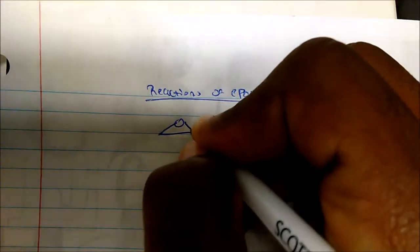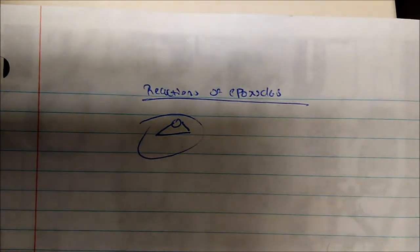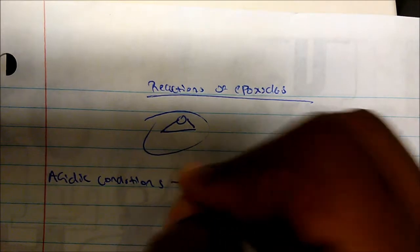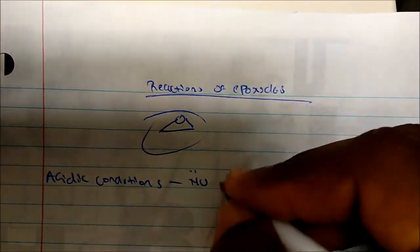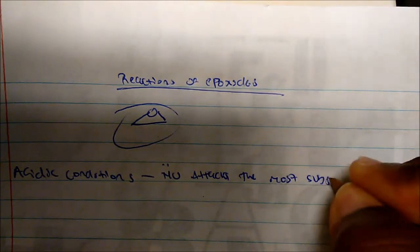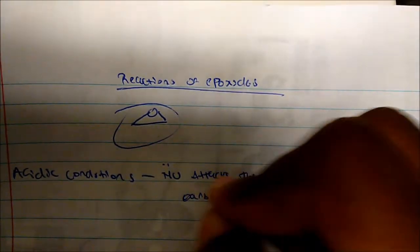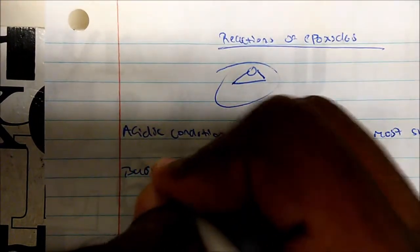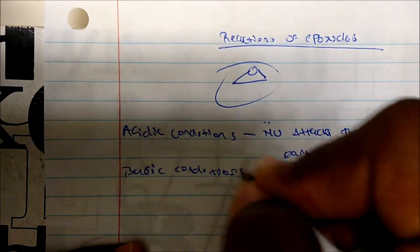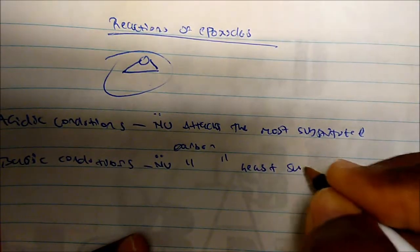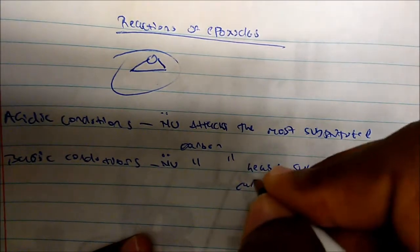Let's talk about the reactions of epoxides. Usually you see this corner-kind-of group on a carbon chain, which signifies that it's an epoxide. There are two things to keep in mind: in acidic conditions, your nucleophile attacks the most substituted carbon. In basic conditions, your nucleophile attacks the least substituted carbon.